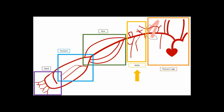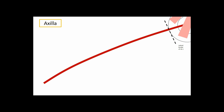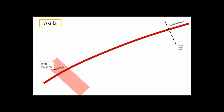The parent artery for the axilla is the axillary artery. The subclavian artery remains subclavian until it passes the lateral border of rib one, and then it becomes the axillary artery. It will remain the axillary artery until it reaches the inferior border of the teres major muscle, at which point it becomes the brachial artery. So: lateral border of rib one to inferior border of teres major defines the axillary artery.